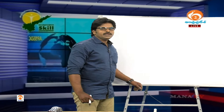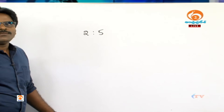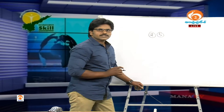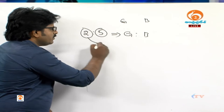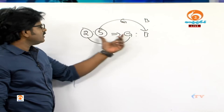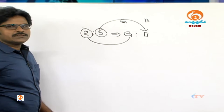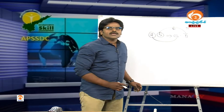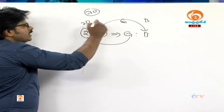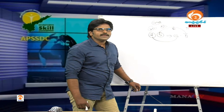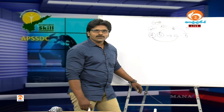Let's look at the properties of ratio. Consider the ratio 2 is to 5. If we have girls to boys as 2 is to 5, it means for every 2 girls there are 5 boys. If the total is 70 and we have 20 girls and 50 boys, the ratio is still 2 is to 5.